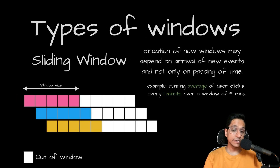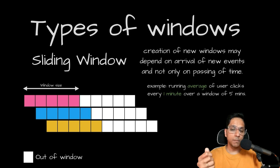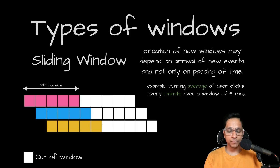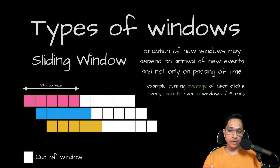Let's look at the third type of window: the sliding window. Similar to hopping windows, the window slides over time or events, continuously counting and aggregating events within the window based on a slide interval. It may totally depend on the arrival of events and not the actual passing of time, which means if there are no new events, the window won't slide and a new window won't be created. There is overlap similar to hopping windows because the same event may occur in different windows. For example, a running average of user clicks every one minute over a window of five minutes — sliding windows are really great for calculating running averages.